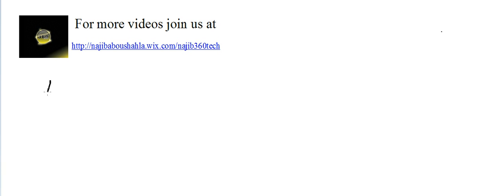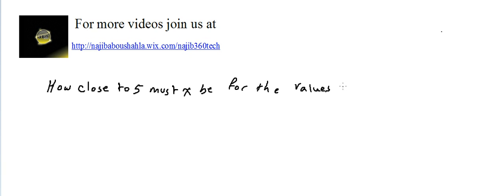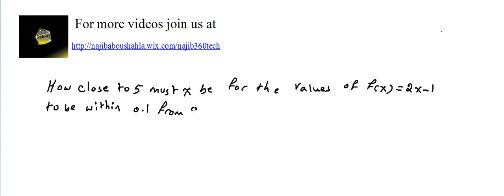Okay, video limits part 6. Let's start. How close to 5 must x be for the values of f(x), which is equal to 2x minus 1, to be within 0.1 from 9? This is clear that we should use the formal definition of limits.